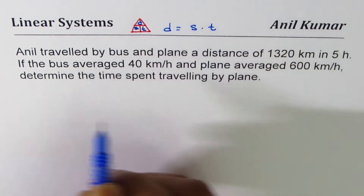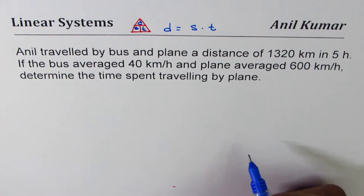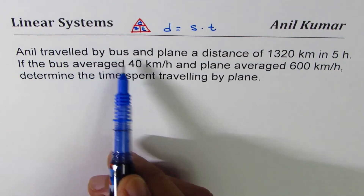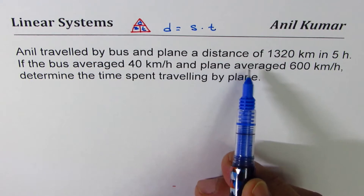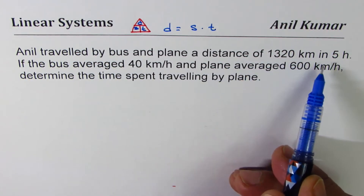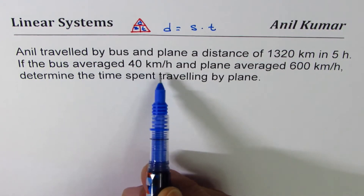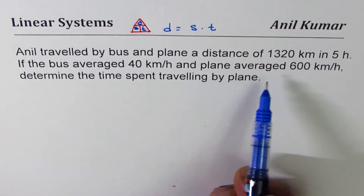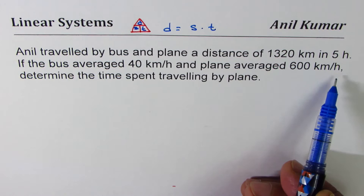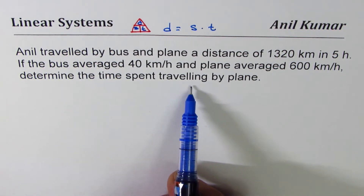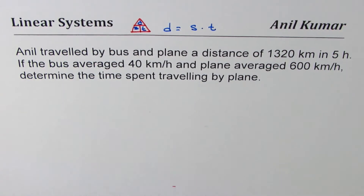The question here is: Anil traveled by bus and plane a total distance of 1320 kilometers in five hours. If the bus averaged 40 kilometers per hour and the plane averaged 600 kilometers per hour, determine the time spent traveling by plane. My suggestion is that whenever you have distance, speed, and time problems, make a table and then approach.